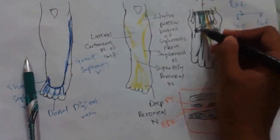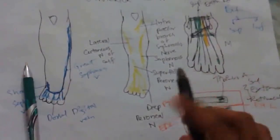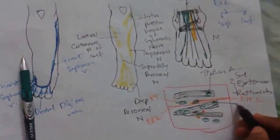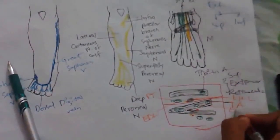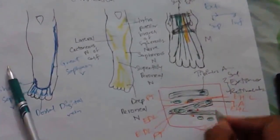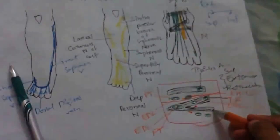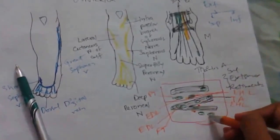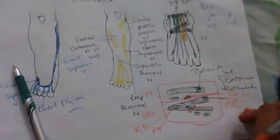The upper band of the inferior extensor retinaculum is attached to the medial malleolus, and the lower band is attached to the deep fascia of the sole. The upper band encloses tibialis anterior and extensor hallucis longus. The stem encloses extensor digitorum longus and peroneus tertius. The lower band lies below tibialis anterior and extensor hallucis longus, which pass deep to the inferior extensor retinaculum. These structures appear in different cross-sectional planes because the retinaculum is at a slant.